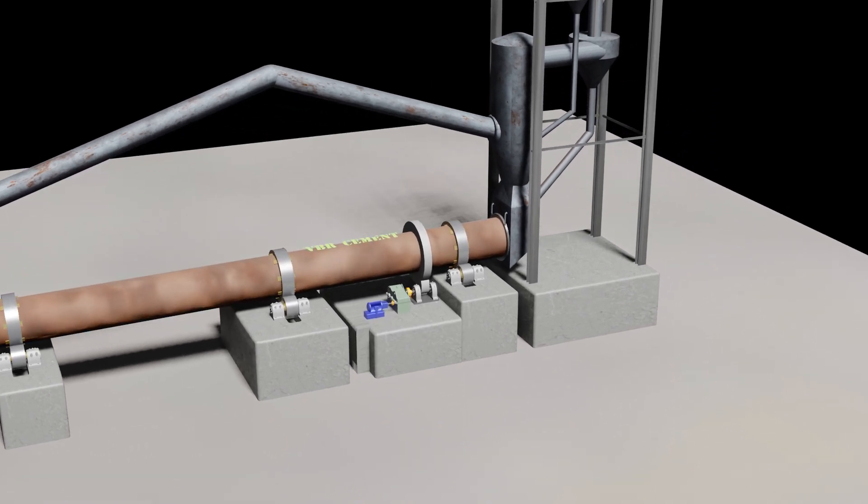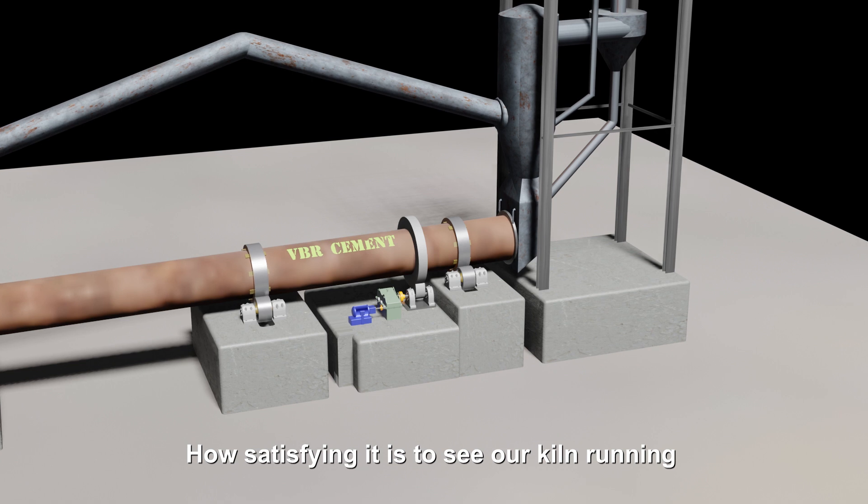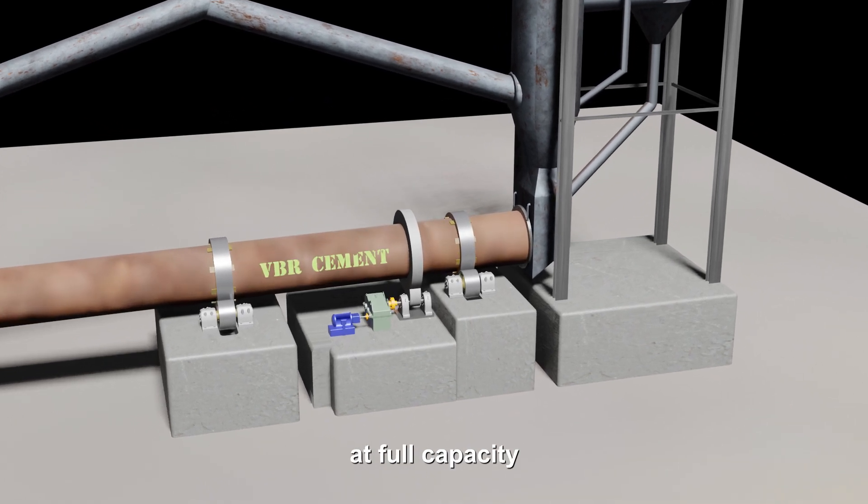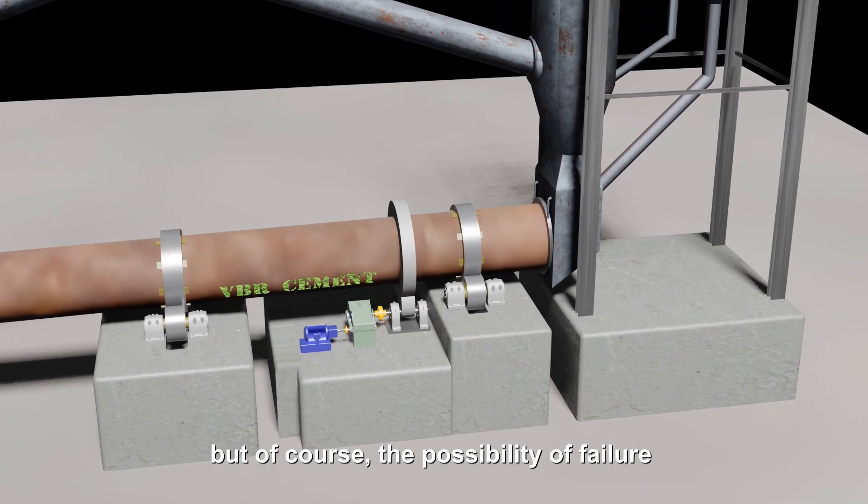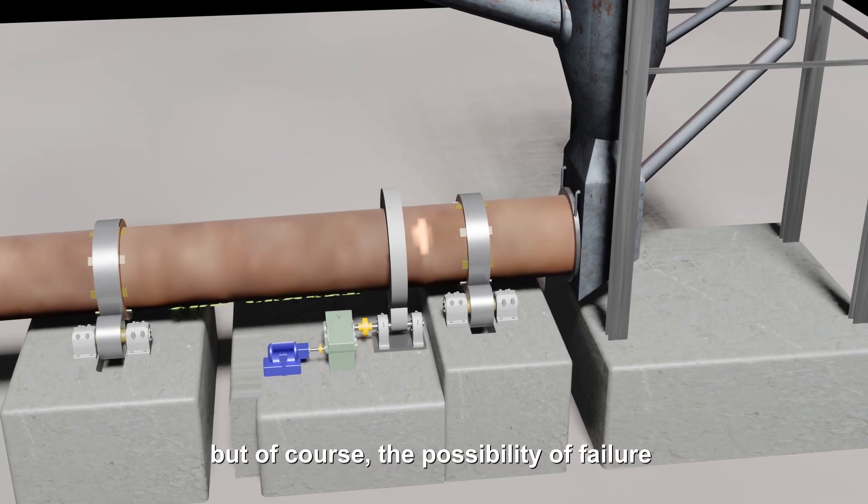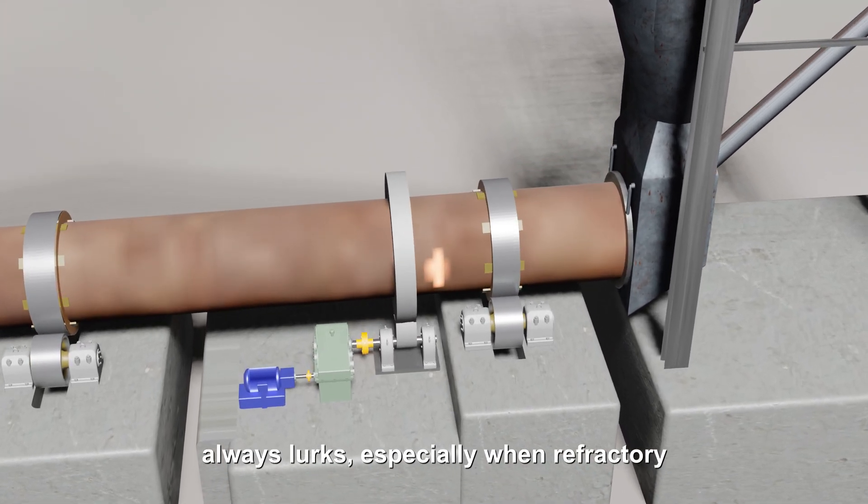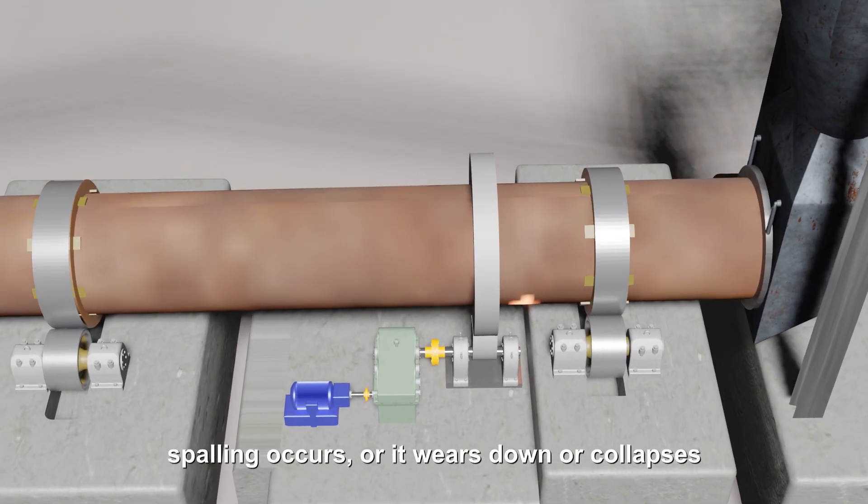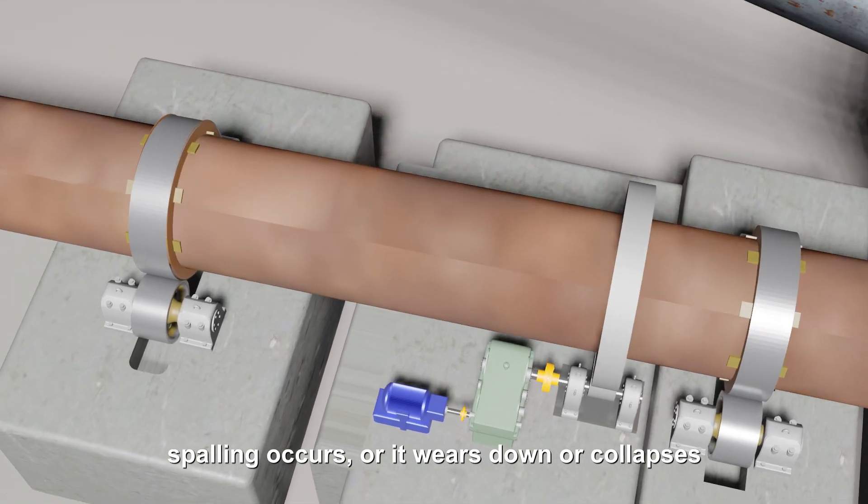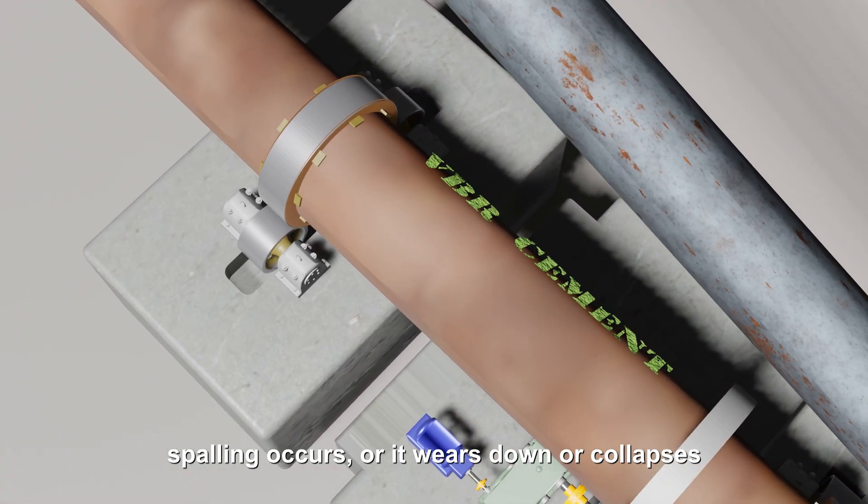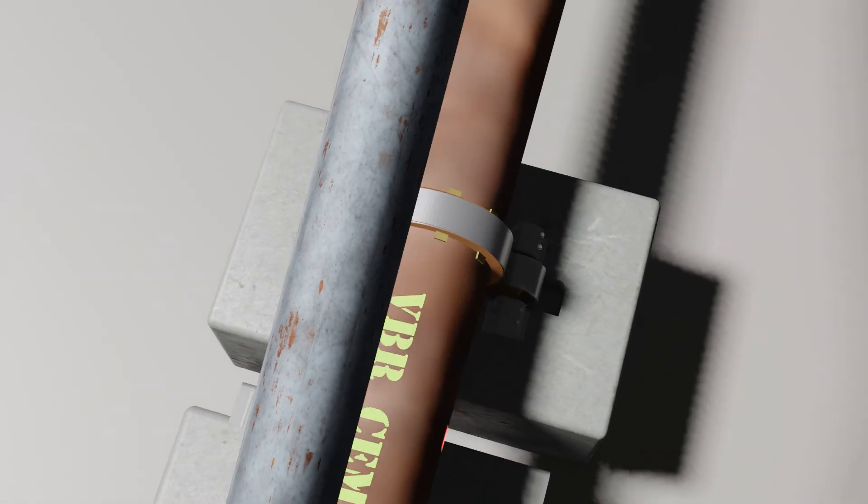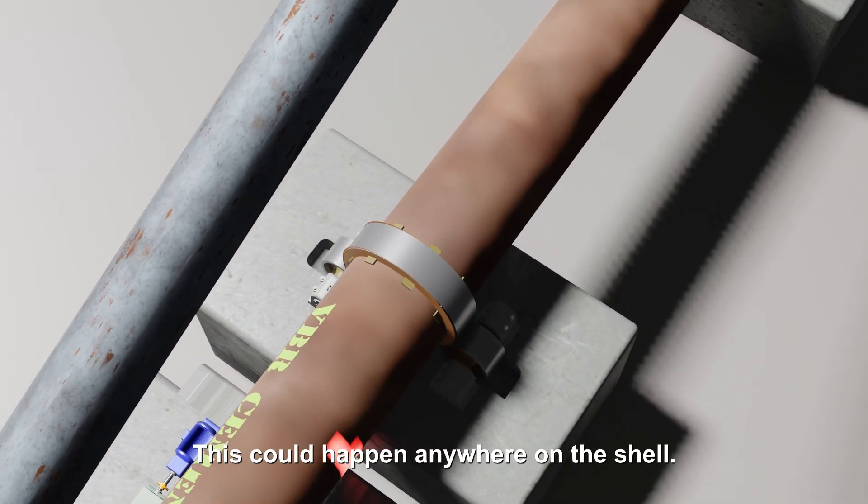Good day everyone. How satisfying it is to see your kiln running at full capacity, but of course the possibility of failure always lurks, especially when refractory spalling occurs or it wears down or collapses and red spots appear. This could happen anywhere on the shell.